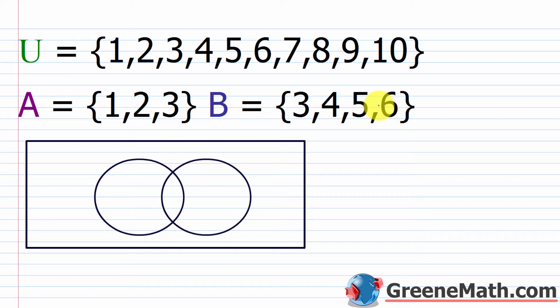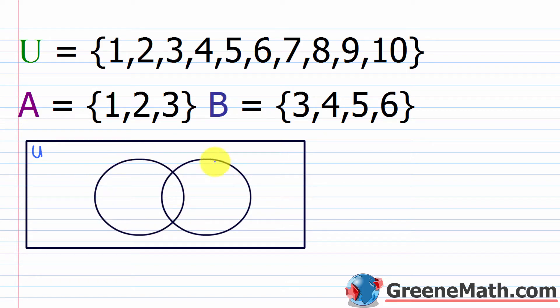The idea here is that we draw a rectangle to represent the universe or the universal set. I'll put a U inside to indicate this whole thing represents set U, so all of my elements should be listed inside the rectangle somewhere. I have two subsets of U — set A and set B — and each of these is represented with a circle inside the rectangle, inside our universe.